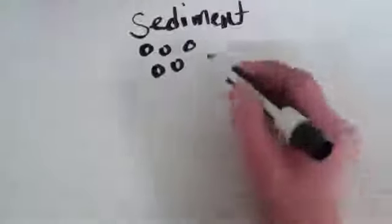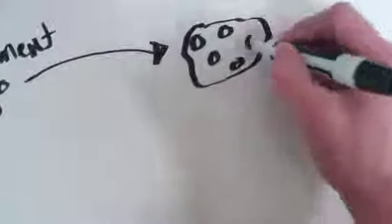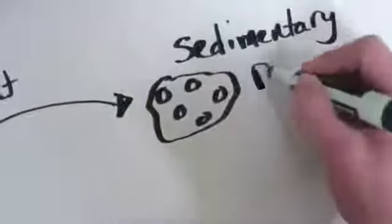So let's start looking at the rock cycle. We're going to start off with sediment. You have little pieces of sand and dirt and mud and pebbles that get squished and cemented together into our first type of rock, sedimentary rock.